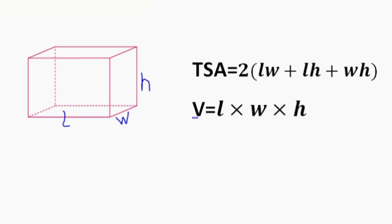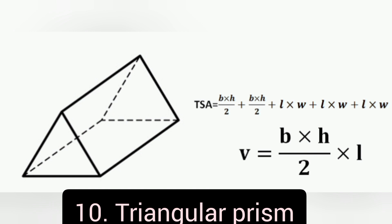Number 10: Triangular Prism. A triangular prism is a figure made of five faces: two triangular faces opposite each other, a left rectangle, a right rectangle, and a bottom rectangle. To find the total surface area, take the sum of the area of the two opposite triangles, plus the area of the left rectangle, plus the area of the right rectangle, plus the area of the bottom rectangle.